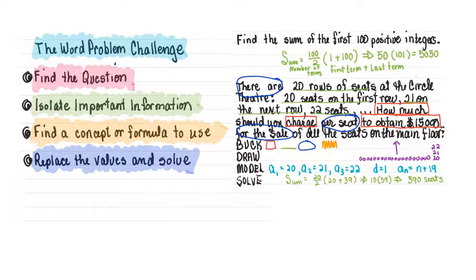Once we have that, we're going to take the amount $15,000 and divide it by 590 seats, and we can come up with the charge for our tickets.